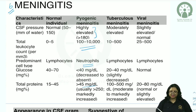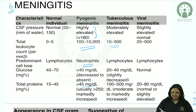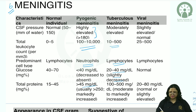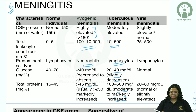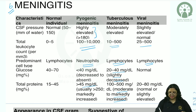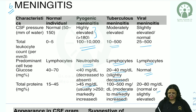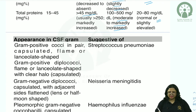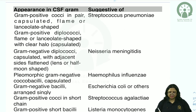In viral meningitis: CSF pressure is normal, leukocyte count similar to tuberculous, predominant cell type is lymphocyte, glucose normal, and protein normal or slightly elevated. Direct microscopy can be performed using gram staining to identify specific bacteria. Gram-positive cocci in pairs in a flame or lanceolate shape — capsulated — is suggestive of Streptococcus pneumoniae. India ink preparation can also visualize the capsule.